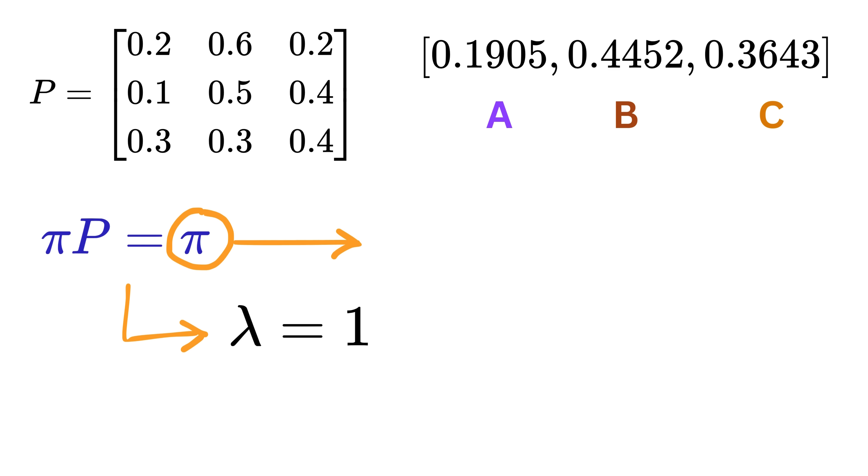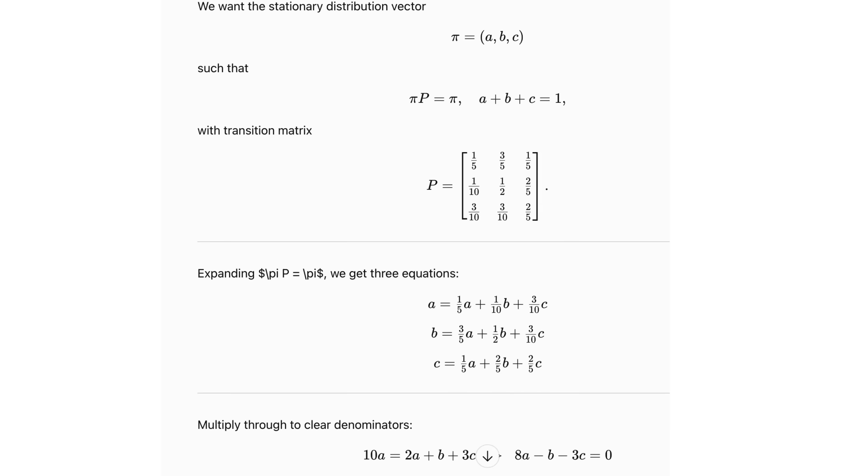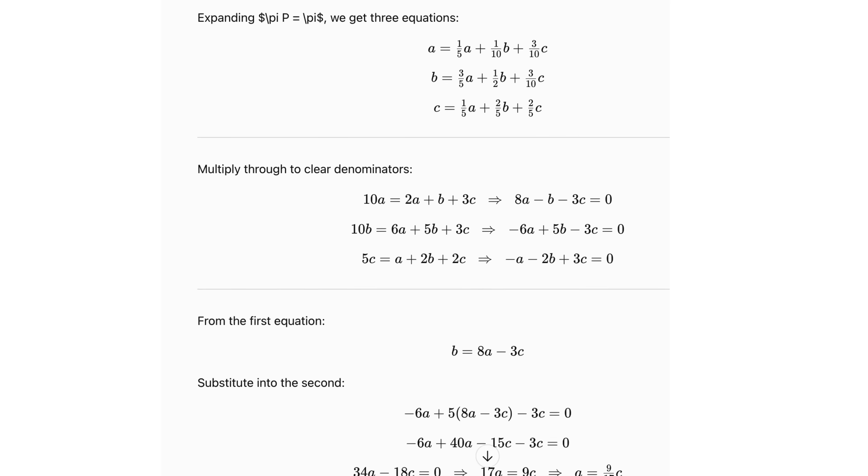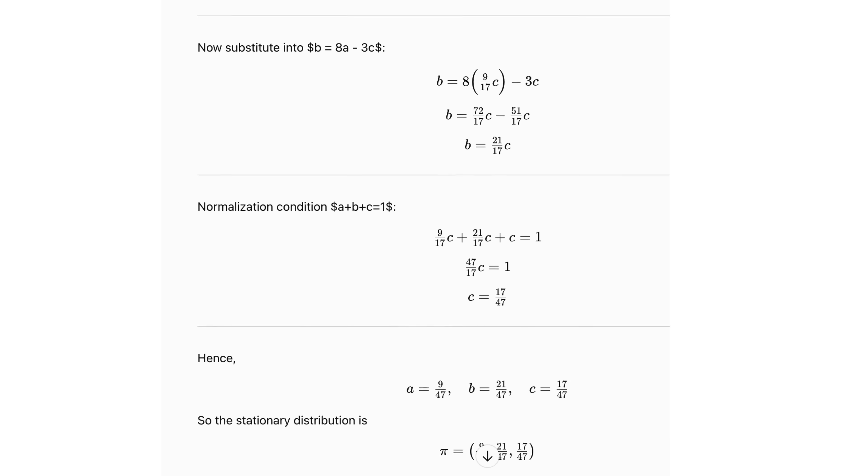So, we say that pi is an eigenvector of the matrix P corresponding to the eigenvalue 1. But since pi is a probability distribution, we also add another rule which says that the sum of the elements in pi must be 1. Of course, I have already explained that before. Solving this system gives us the stationary distribution for our Markov chain.